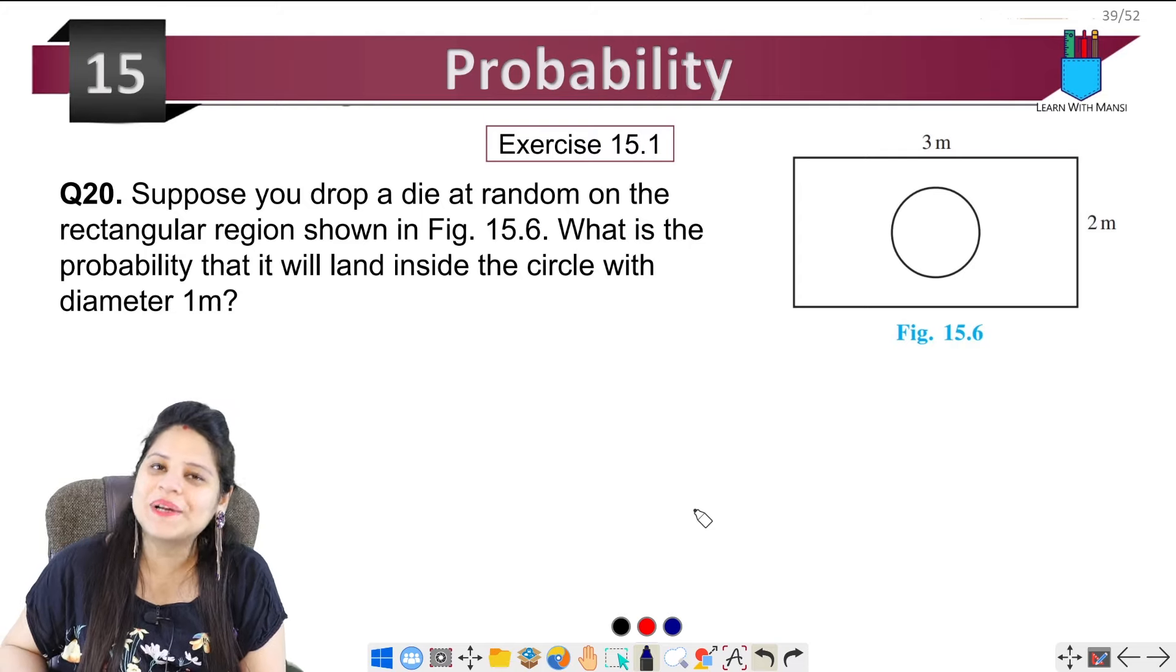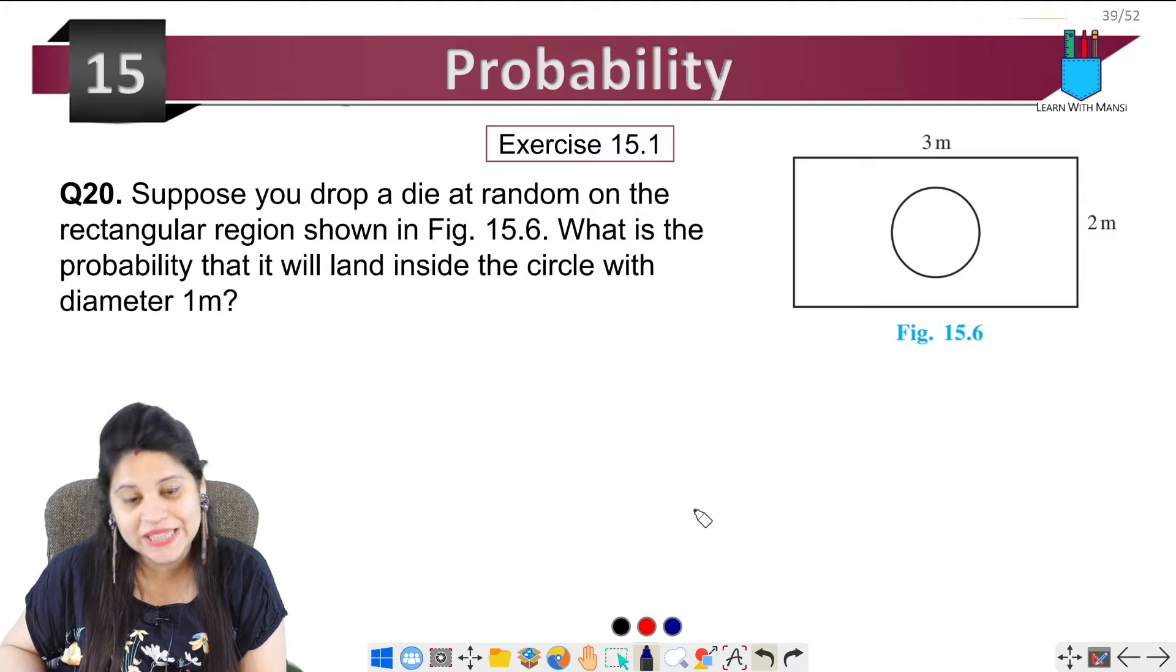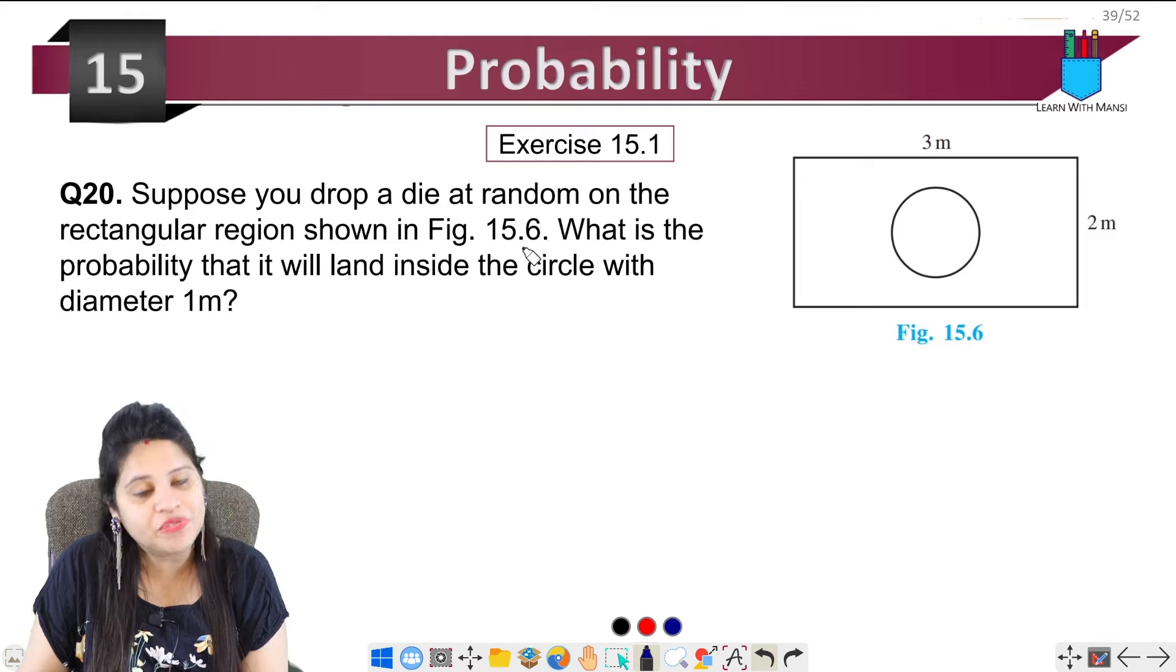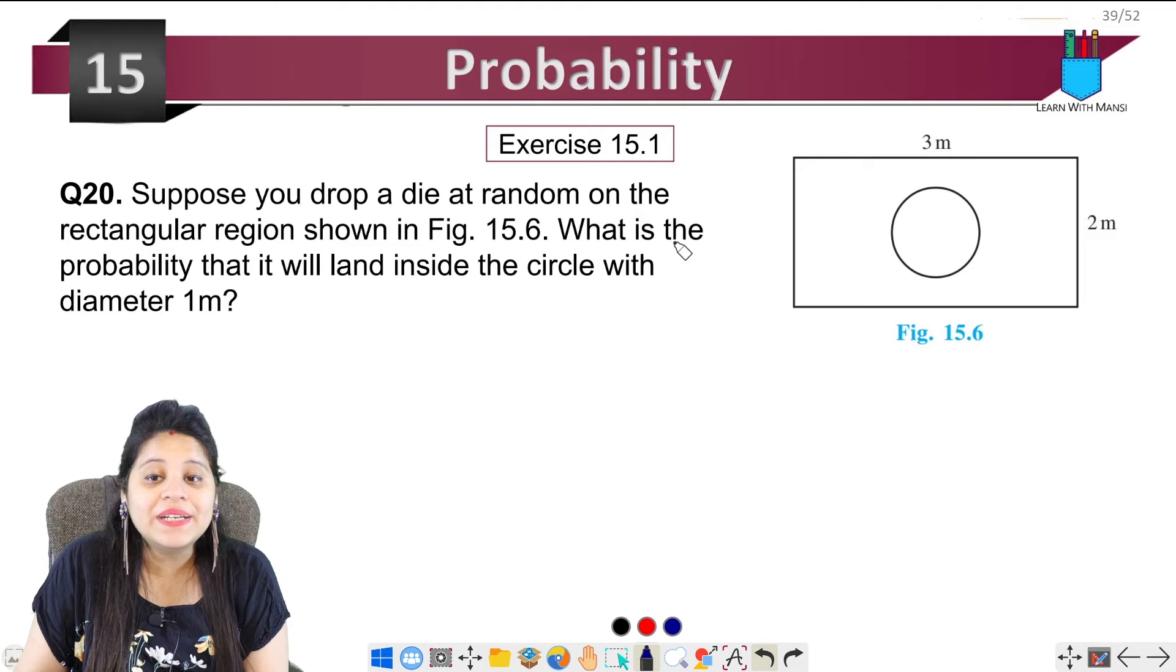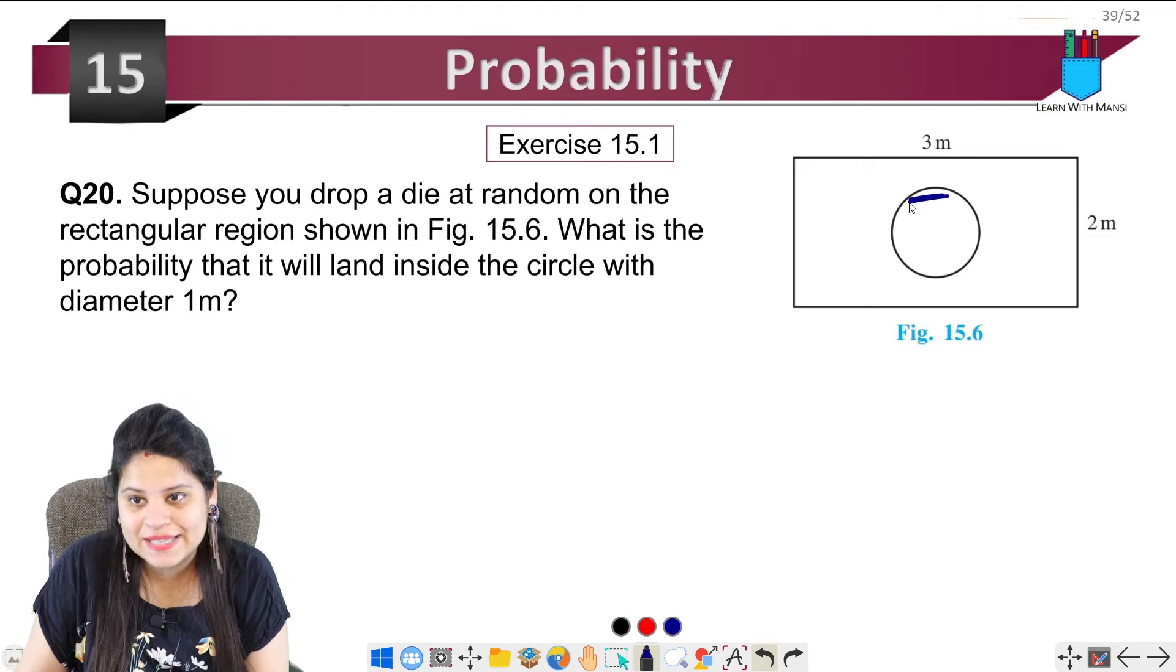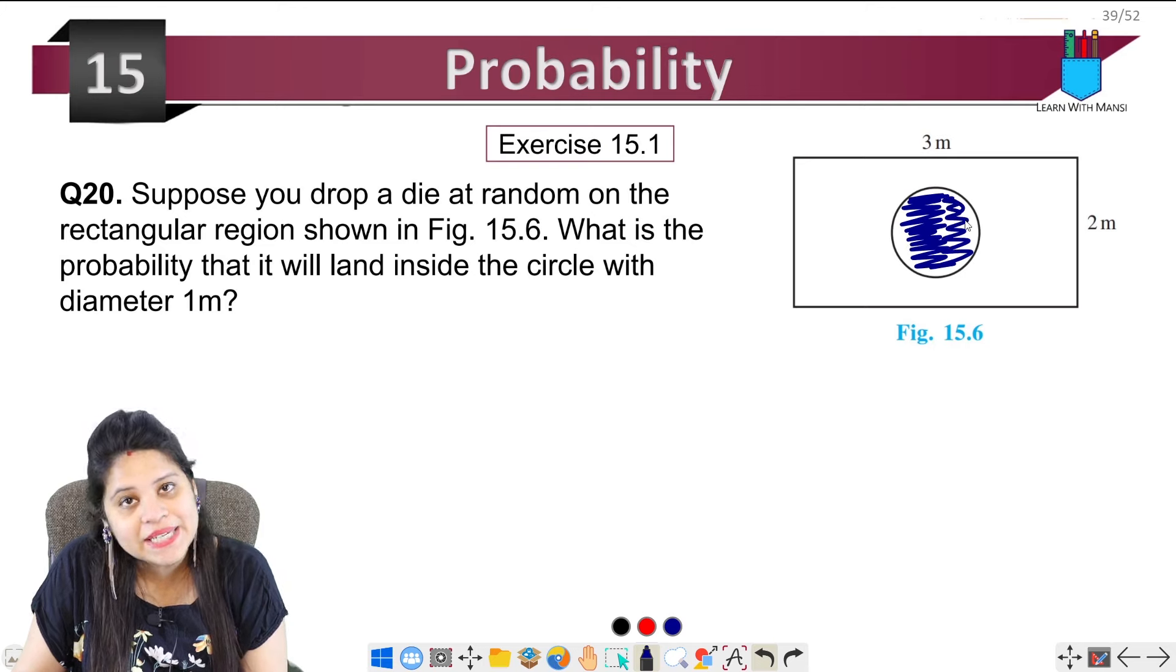Hello everyone, this is Pansi, welcome back to the channel. Now we are on the 20th question of exercise 15.1. The question says suppose you drop a die at random on the rectangular region shown in Fig 15.6. What is the probability that it will land inside the circle?